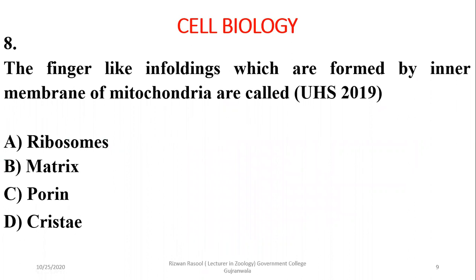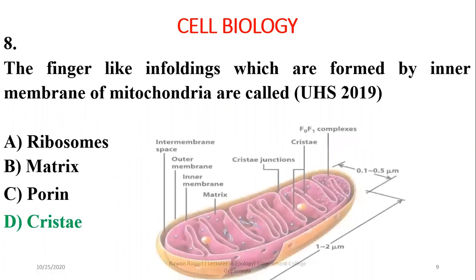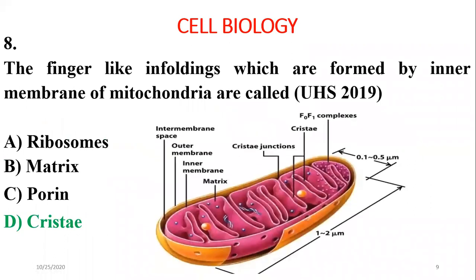Question 8: The finger-like infoldings in mitochondria are the cristae. The right option is delta. These infoldings are the sites for carrying out oxidative processes as well.